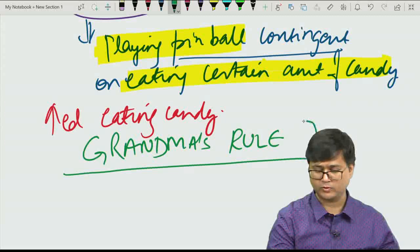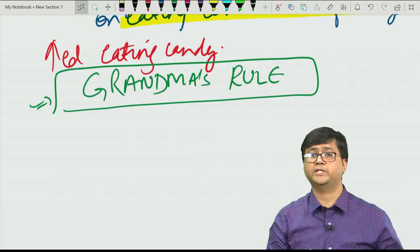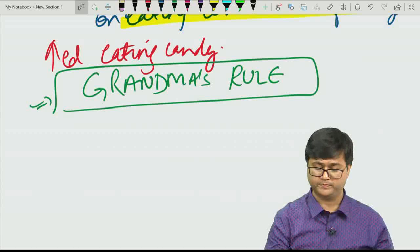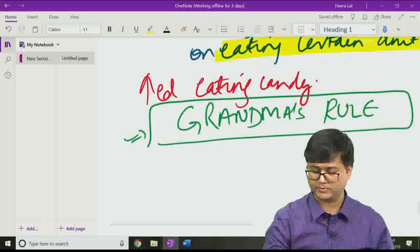This principle is also known as grandma's rule — simply put: if you eat your spinach, only then you can have your dessert. The answer was option B.